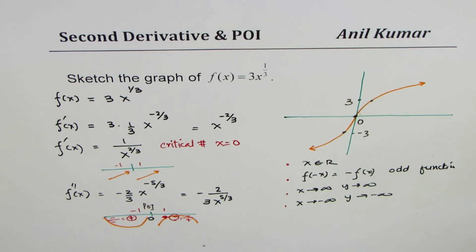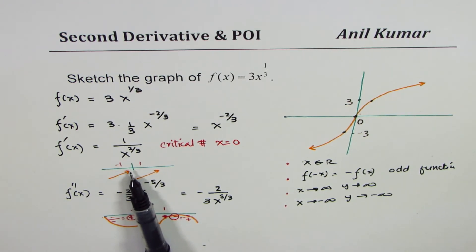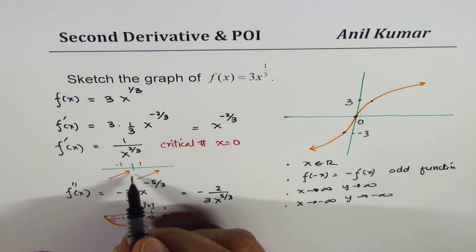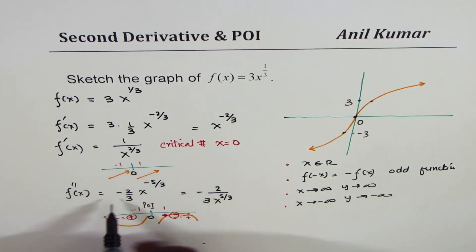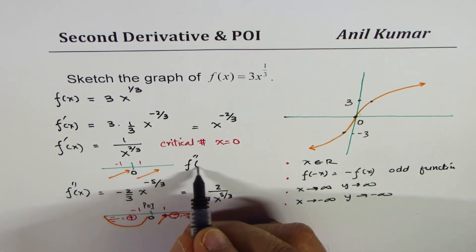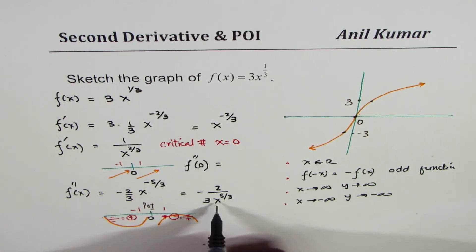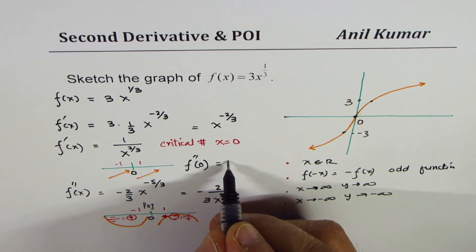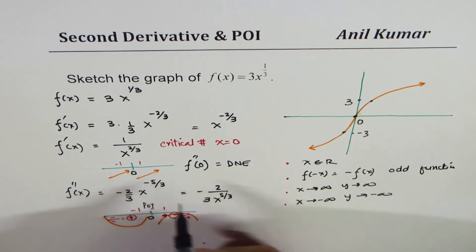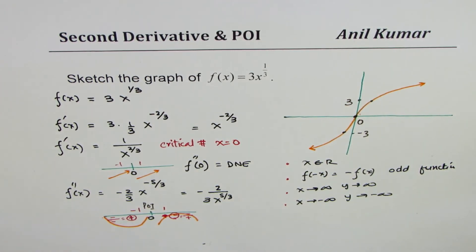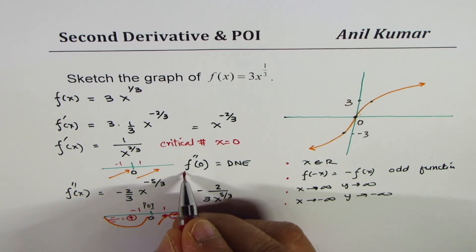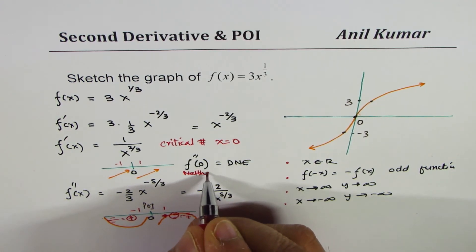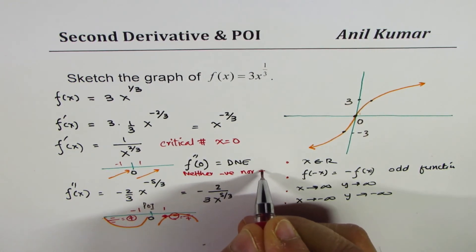So I hope with this video, you understand the importance of second derivative, how we can find concavity, and we can also make sure whether we have a maximum or a minimum or not. Here you will analyze, at x equals to 0, the second derivative is neither negative nor positive. So here, at 0, this second derivative does not exist. So it's neither negative nor positive. Let me write down here. So it's neither negative nor positive.